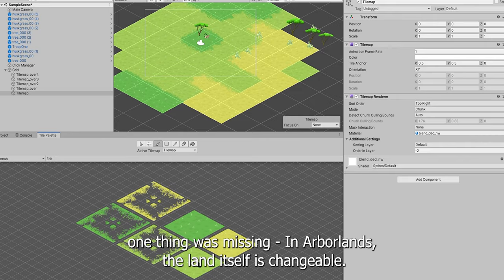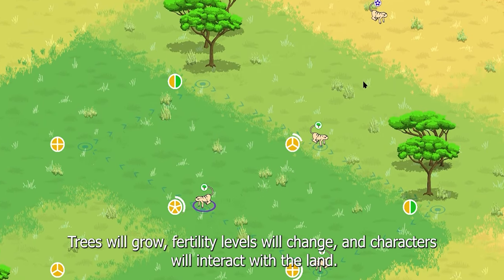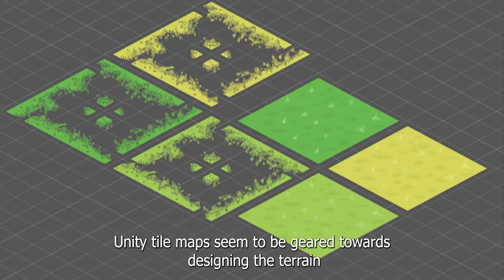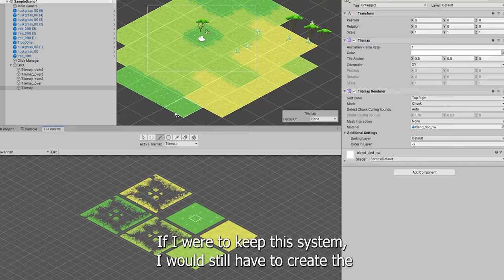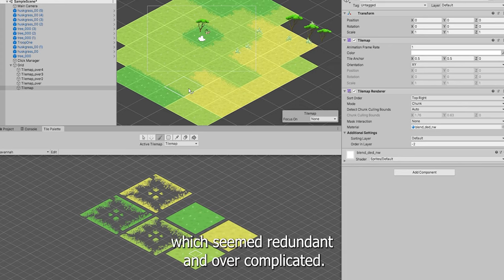In Arborlands the land itself is changeable. Trees will grow, fertility levels will change, and characters will interact with the land. Unity tile maps seem to be geared towards designing the terrain for pre-built levels. If I were to keep this system I would still have to create the interactable land objects on top of the Unity tile map, which seemed redundant and over complicated.